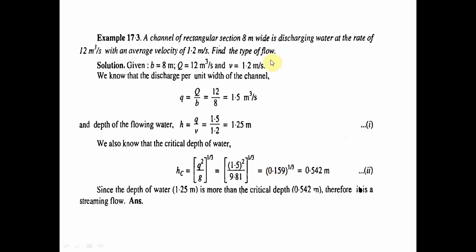Next problem: A channel of rectangular section 8 meters wide is discharging water at a rate of 12 cubic meters per second with an average velocity of 1.2 meters per second. Find the type of flow. Given: breadth = 8 meters, Q = 12 m³/s, V = 1.2 m/s.